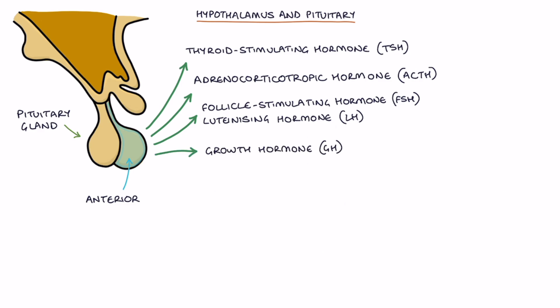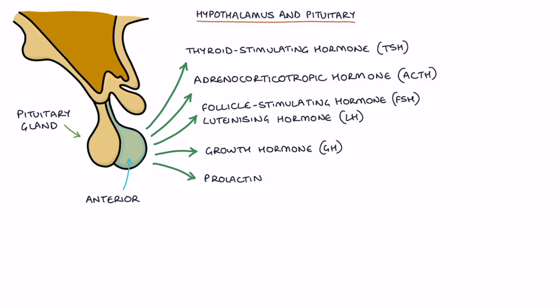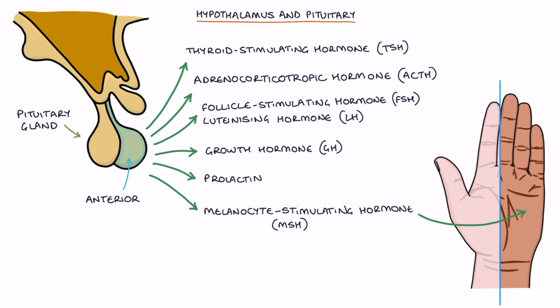Growth hormone or GH, prolactin which stimulates breast milk production and melanocyte stimulating hormone or MSH which stimulates melanocytes to produce melanin which increases the skin pigmentation.